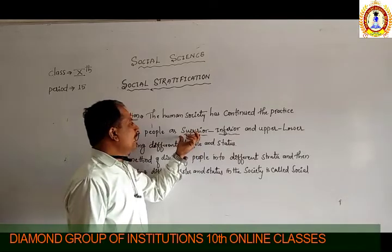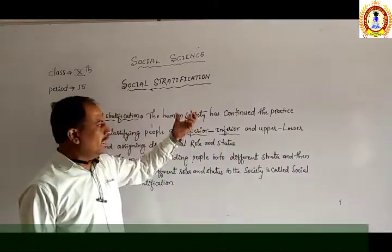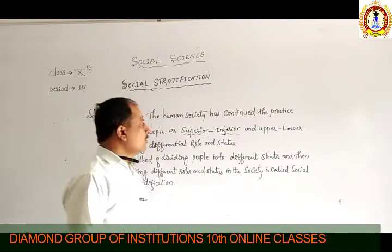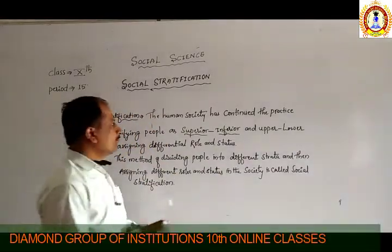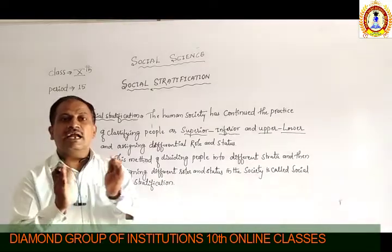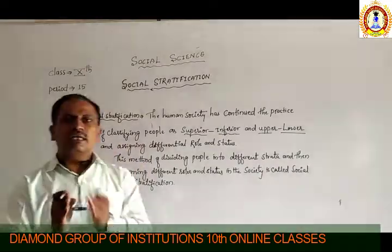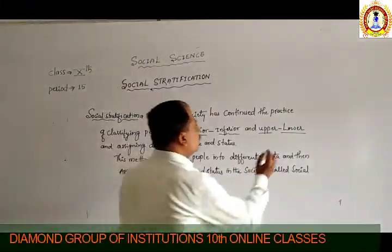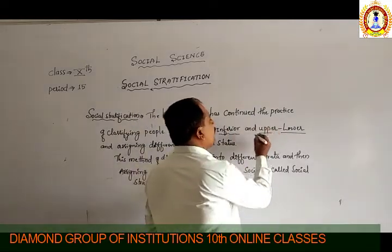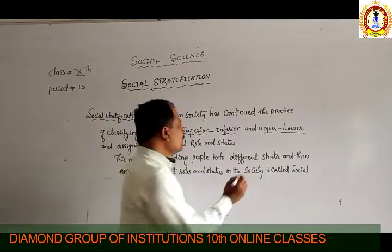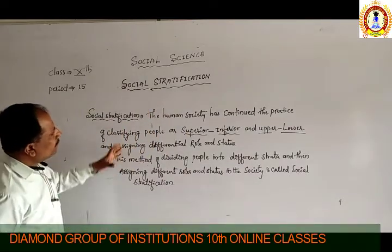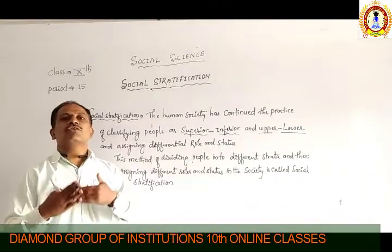Because the superior person has a very high economic status, and the inferior person has a very low economic status. Another point which differentiates is upper and lower class. The society was divided into two groups — one is the upper group and another is the lower group. People who are economically very weak are in the lower class, and people who are economically high or rich are in the upper class.